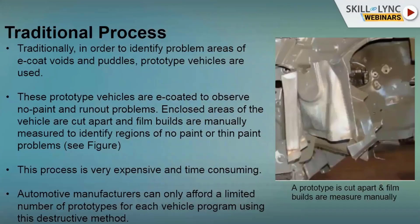Moving to the next process - the traditional process for paint in BIW (Body in White). A major issue is voids, which are air bubbles. When the complete body goes into the tank, sometimes air traps occur, and those areas will not be covered with the electrolysis paint solution in the paint booth. You have to identify those void problems physically.